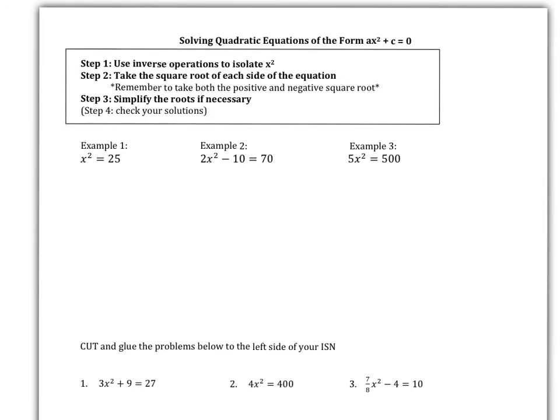Take out your note sheet and we'll do the first few examples together. For every quadratic equation, we want to use inverse operations to isolate x squared, kind of like we're used to isolating x. Then we'll take the square root of each side of the equation, because whatever we do to one side we need to balance the equation by doing the same thing to the other side. We will have to remember to take the positive and negative square roots, and then we'll simplify the roots if necessary.